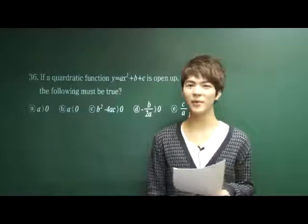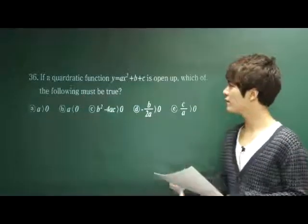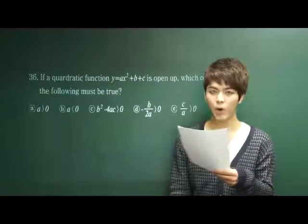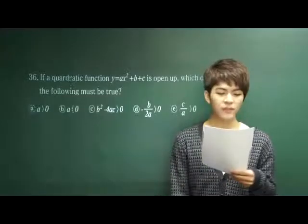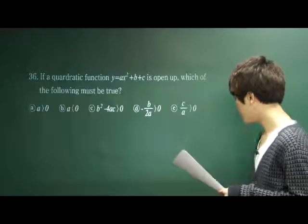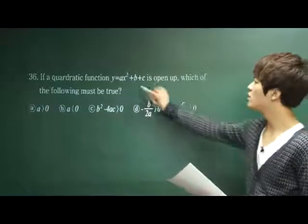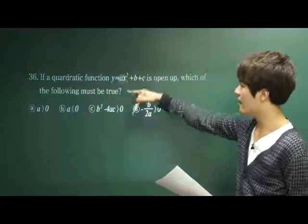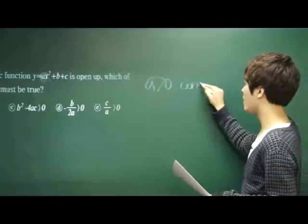Let's start with number 36. Question number 36: if a quadratic function y = ax² + bx + c is open up, which means concave upward, which of the following must be true? To find out if it's concave up or down, we look at the coefficient a. If a is positive, then it is concave upward.